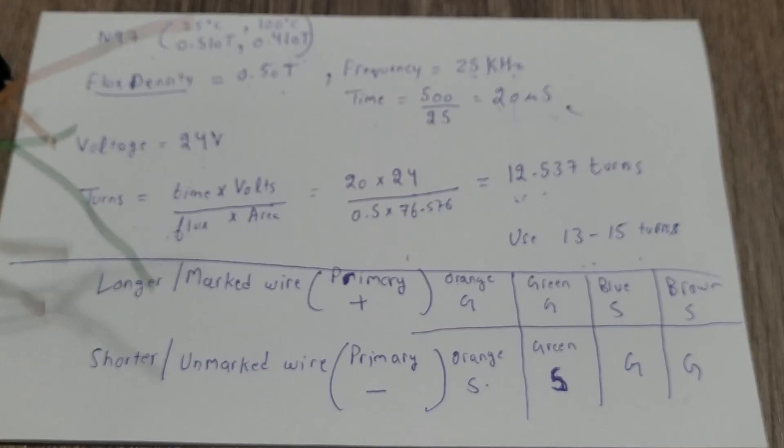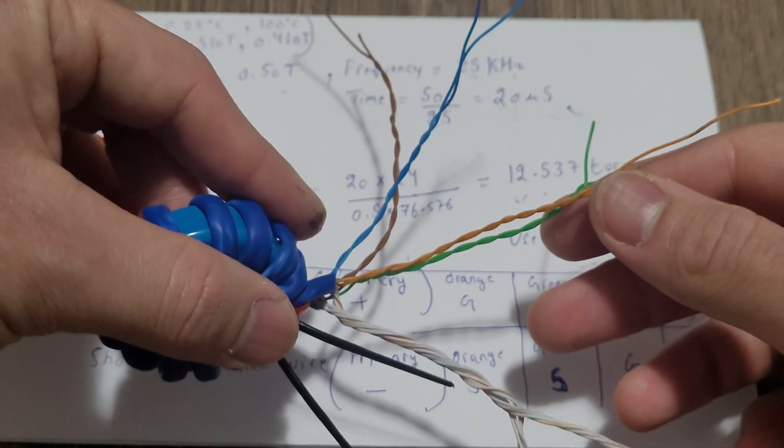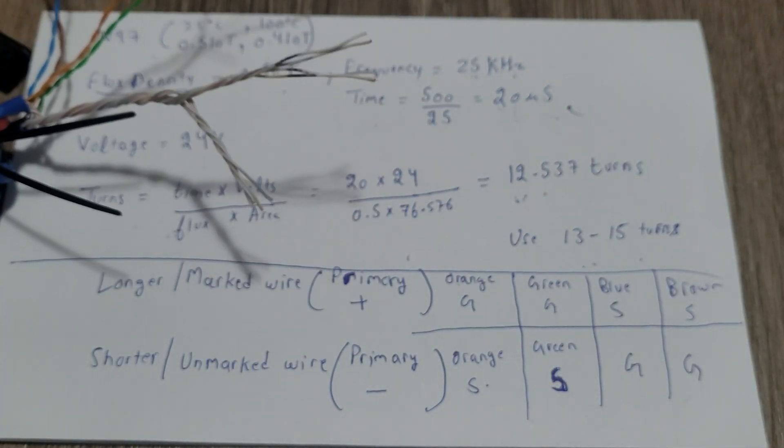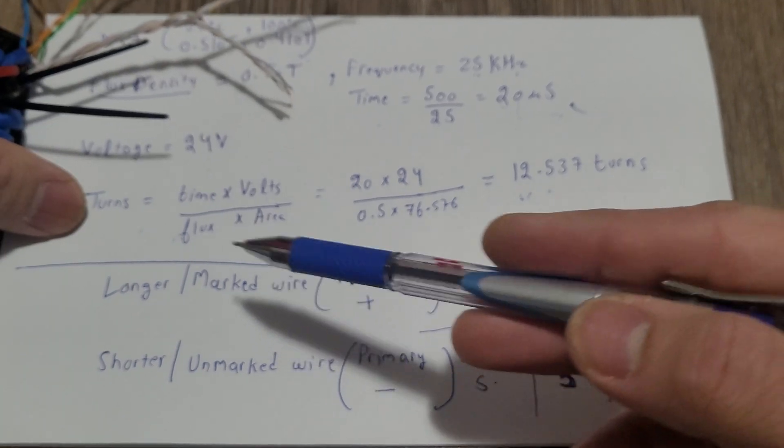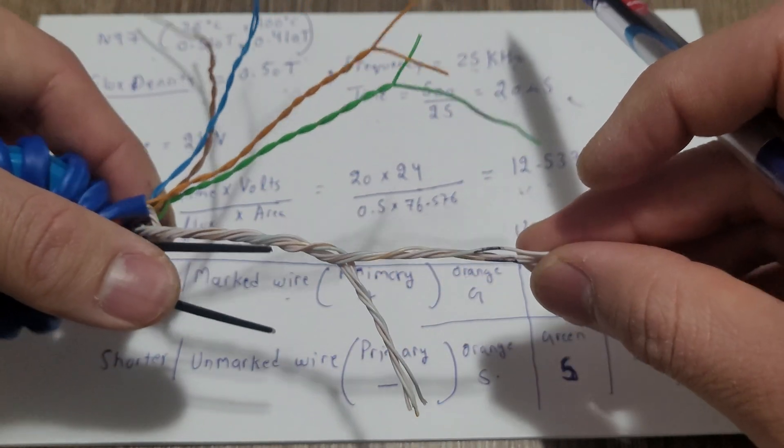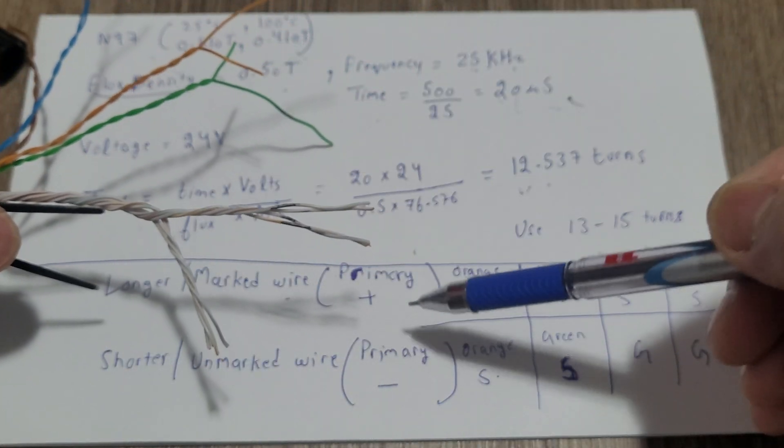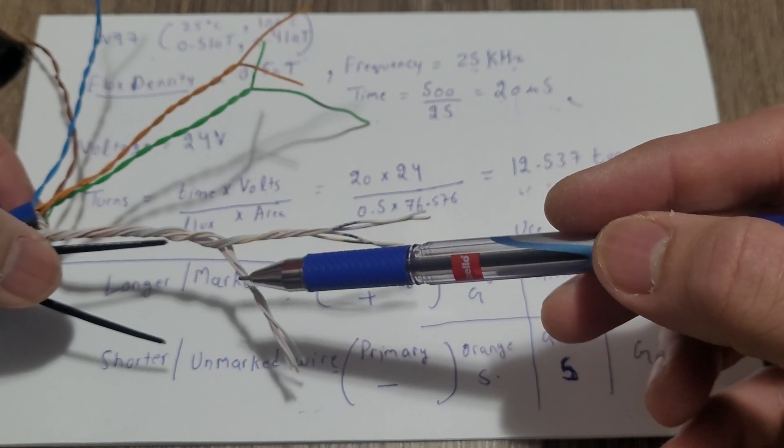All right, so this is what it looks like after everything is done. I made this general table to help the beginners. So longer slash marked wire, this one here, will be the positive. Shorter slash unmarked wire, this one will be the negative for primary.